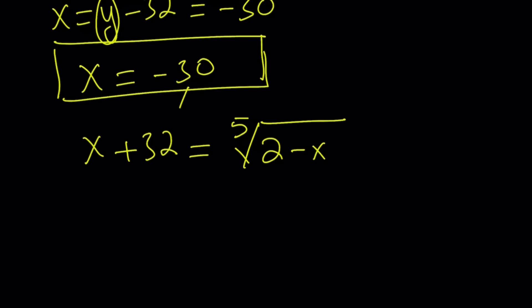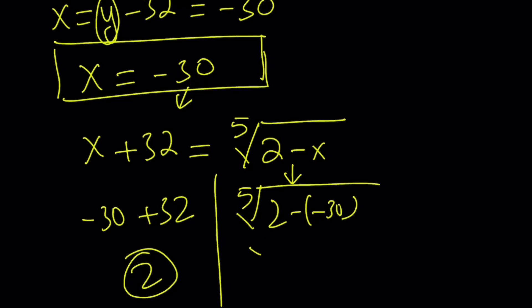If you plug in negative 30 on the left-hand side, you get negative 30 plus 32, that gives you a positive 2. If you plug in negative 30 on the right-hand side inside the radical, you're going to get the fifth root of 2 minus negative 30, that is positive 32, the fifth root of 32. And that's equal to 2 again. So these equations basically agree, which means negative 30 satisfies the original equation. You don't have to worry about extraneous solutions here, because this is a fifth power equation, so it has to have at least one real root.